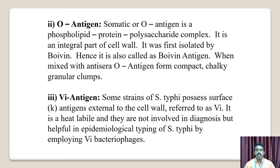O antigen. The somatic O antigen is a phospholipid-polysaccharide complex and is an integral part of the cell wall. It was first isolated by a Boivin scientist, hence also called the Boivin antigen. When mixed with antiserum, O antigen forms compact chalky granular clumps. Vi antigen: some strains of Salmonella Typhi possess a surface K antigen external to the cell wall referred to as Vi. It is heat-labile, not involved in routine diagnosis, but helpful in epidemiological typing of Salmonella Typhi using Vi bacteriophage.